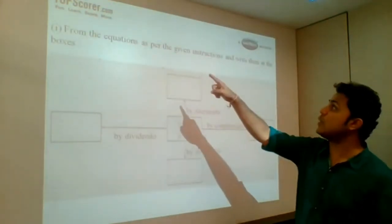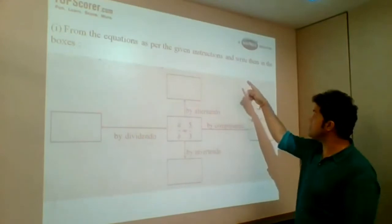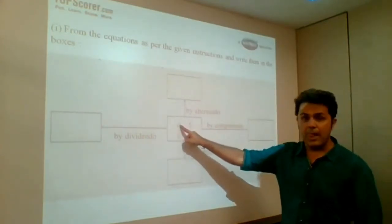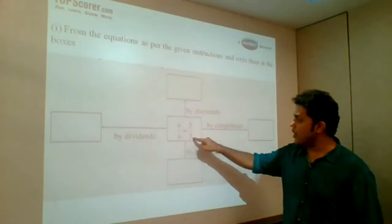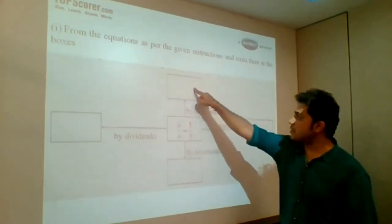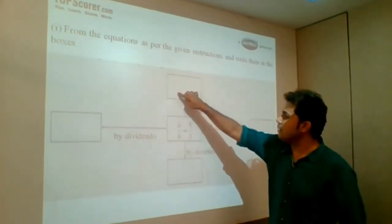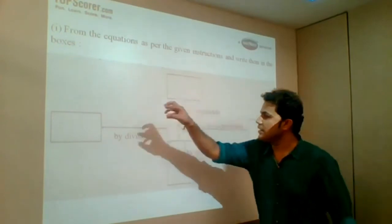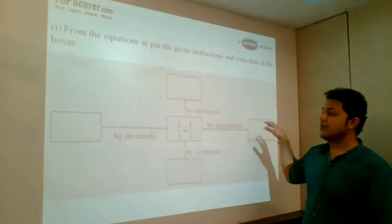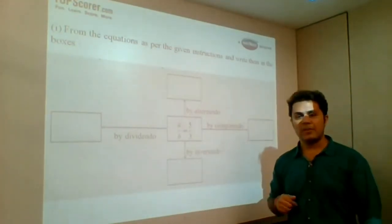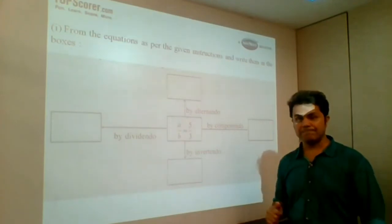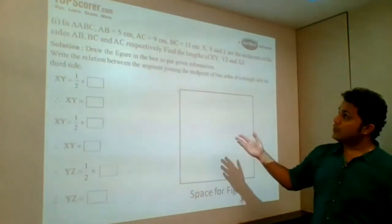Let's understand this. From the equations, as per the given instructions, write them in the boxes. Like A upon B is 5 upon 3. Then by alternendo, it would be B upon A is equal to 3 upon 5. This way, you are given 3 more boxes to solve. So that would be all the more easier.